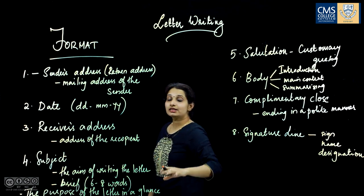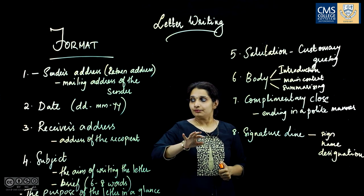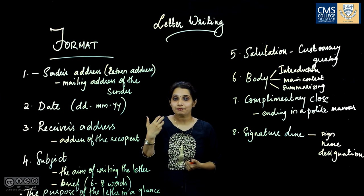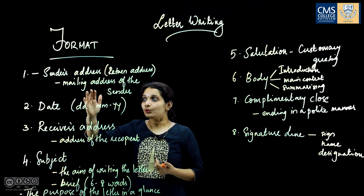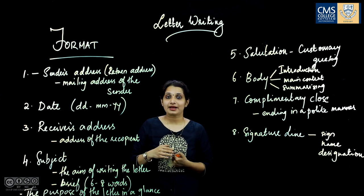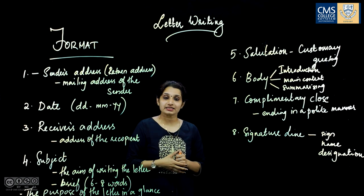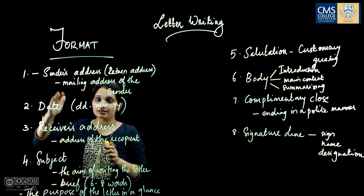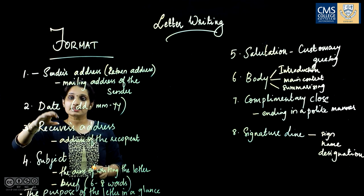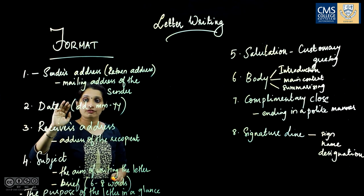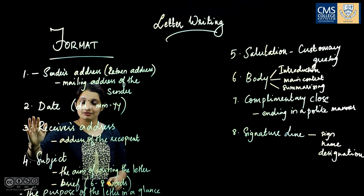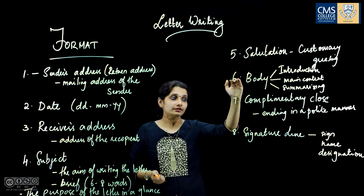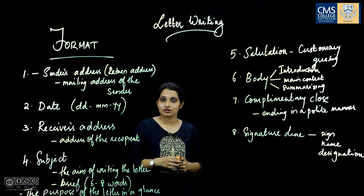These are the eight components of a formal letter. Since we mostly type letters these days, we follow the left alignment pattern — all components are aligned to the left side of the page. We start with the sender's address left-aligned, then after a space the date in alphanumeric format, then the receiver's address, the subject line, the salutation, the body, the complimentary close, and the signature.